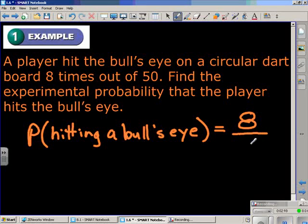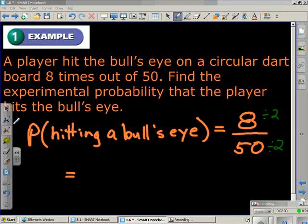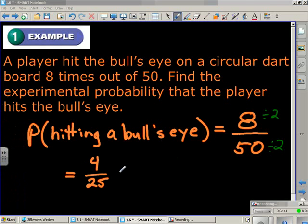Over 50, the total number of turns that he took trying to hit the bullseye, which would be 50. Now that fraction's not reduced. It can reduce by a factor of two. It means to divide both the numerator and the denominator by two, which is going to give us four over 25. You could convert that into a percent, which would be 16%.